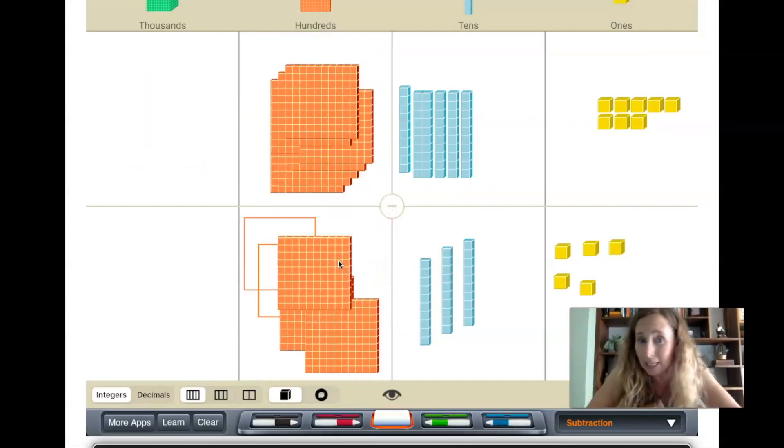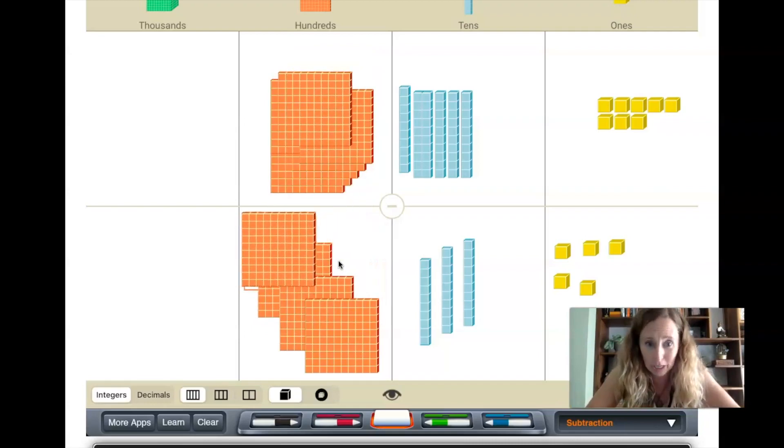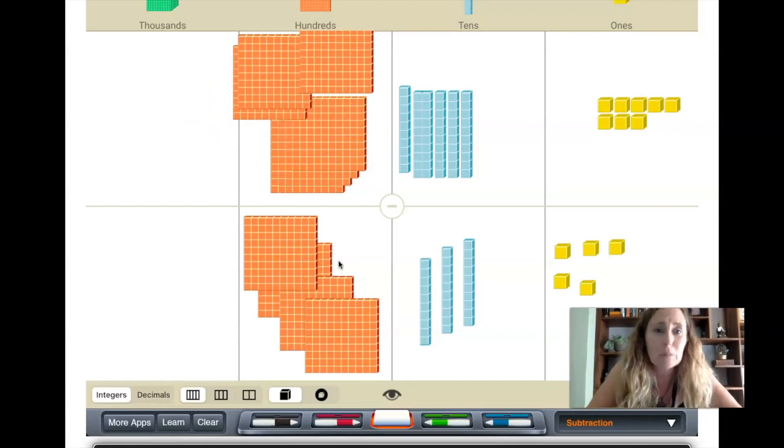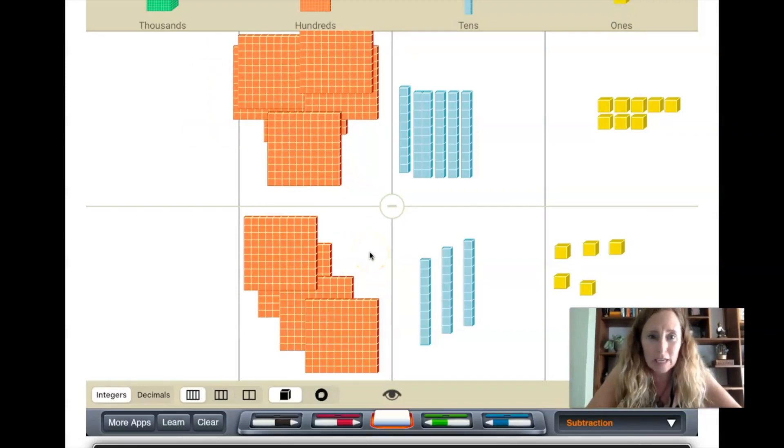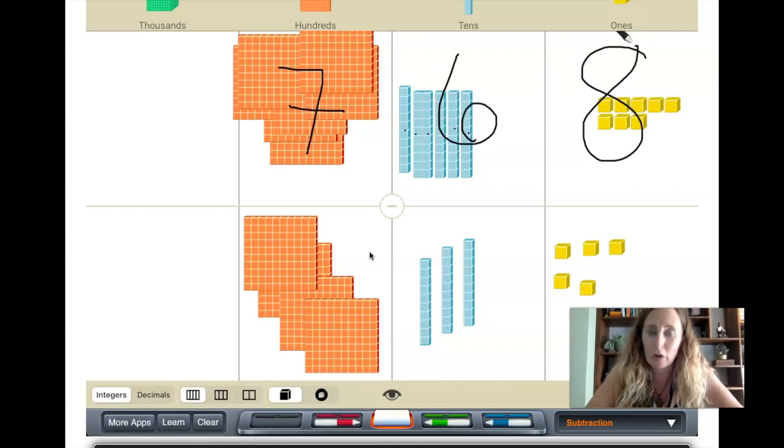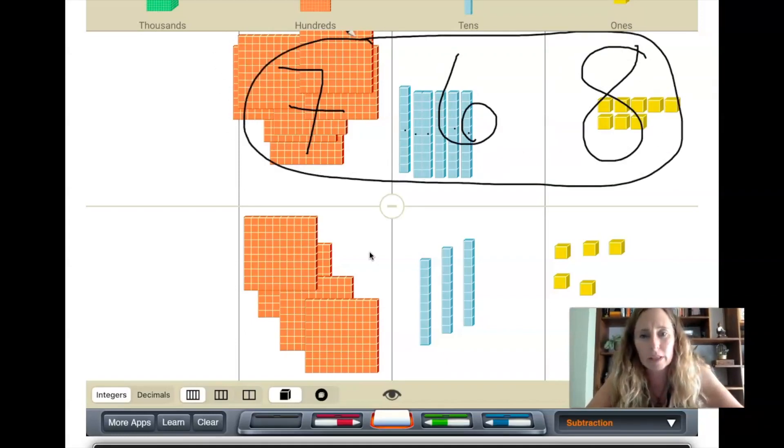But uh-oh, I do not have enough hundreds, so I'm going back again up next door, taking that thousand, chopping it into ten groups of hundred, and now I can subtract. Once I've done that, I'm just moving these blocks around a little so you can see that I definitely have seven of those hundreds, I've got six tens, and I have eight ones, and that is indeed the exact same answer we got when we did it with the standard algorithm.